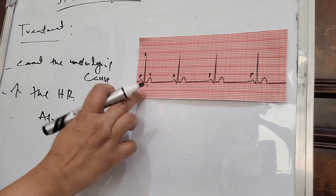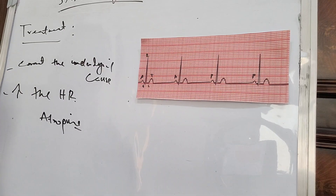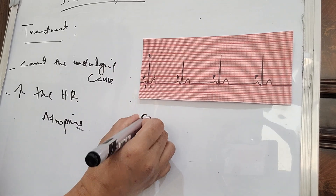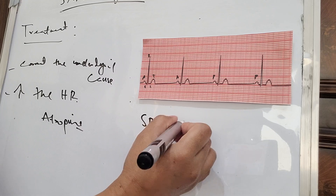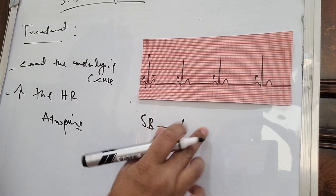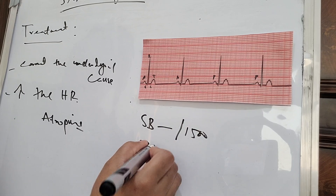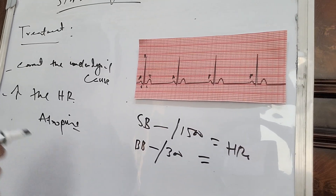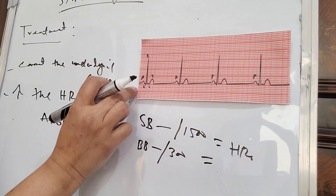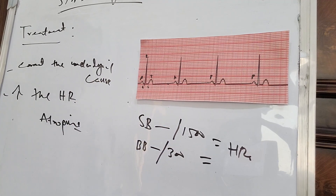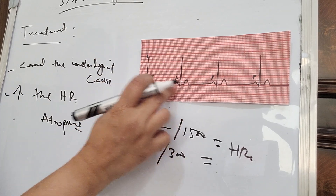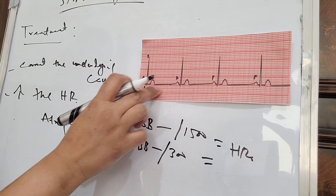As I told you yesterday in my first ECG interpretation lecture, how to calculate the heart rate — I will repeat again. If you are using small boxes, divide by 1500. If using big boxes, divide by 300. That gives you the heart rate. In the ECG pattern, the P wave is regular and uniform, the QRS complex is normal, and the PR interval is normal. The only problem is bradycardia — the heart rate is less than 60.